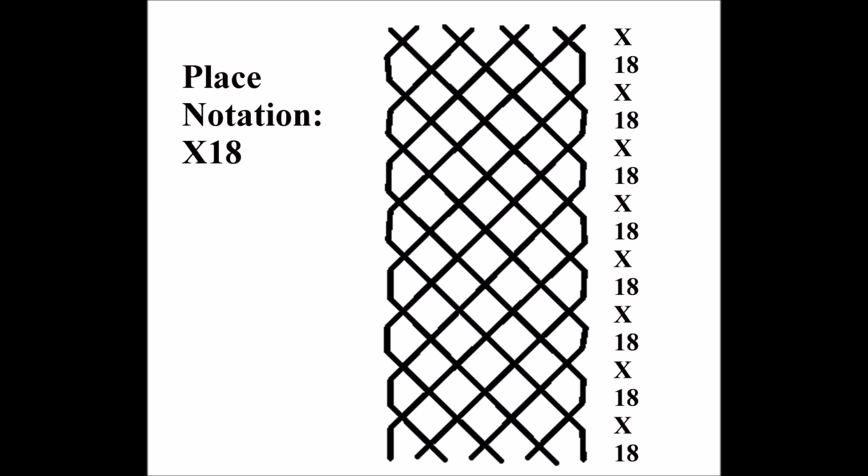Here's plain hunt on eight. You can probably guess by now that the place notation is cross one eight. And here's what it sounds like. You can hear eight bells, but you can only see six of them because I'm ringing computerised bells.